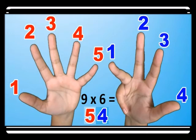For nine times six, the sixth finger is bent. Before it you have five, and after we have four, so fifty-four.